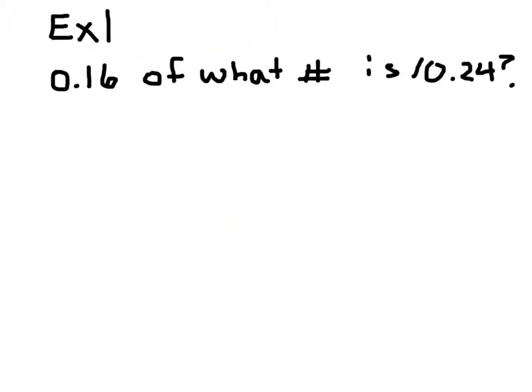Let's take a look at the first example. I want you to write this down in your notebooks and copy it just like I have it on this screen. First, I'm going to underline the key words: of, what, and is. I'm going to take this word expression and write it as an algebraic equation, following the order of the sentence. So 0.16 of, meaning multiply, what number—I'll use n for the number—is 10.24.